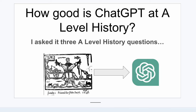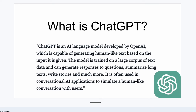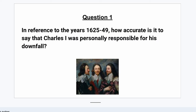Hello, so in this video I'm going to test out how good ChatGPT is at A-level history by asking it three different kinds of A-level history essay questions. So if you're not sure what ChatGPT is, here is the way that ChatGPT describes itself. It's basically a chatbot that scours the internet and can answer quite complex questions, and it can also answer follow-up questions about an earlier question. So it's kind of AI.